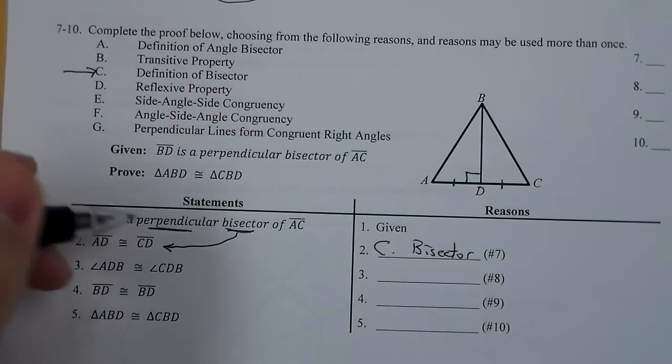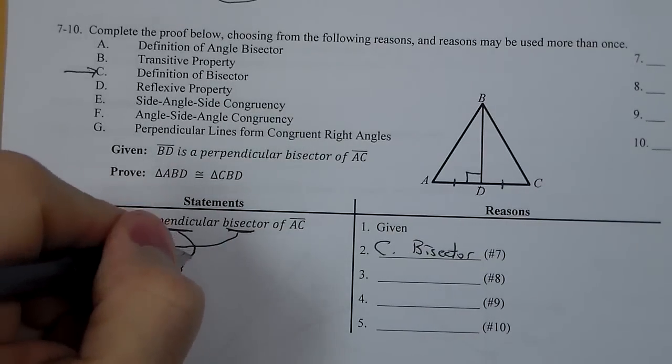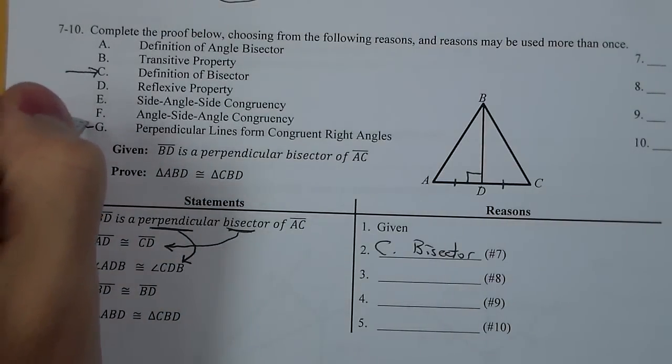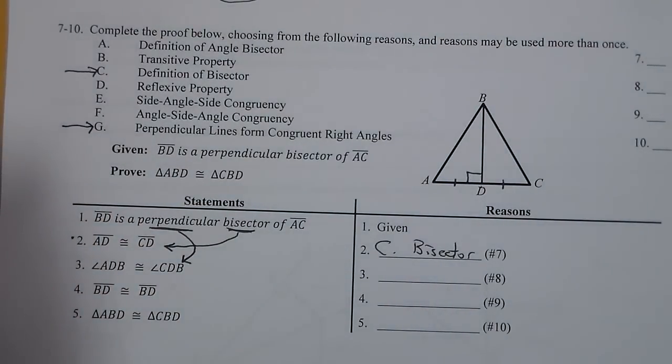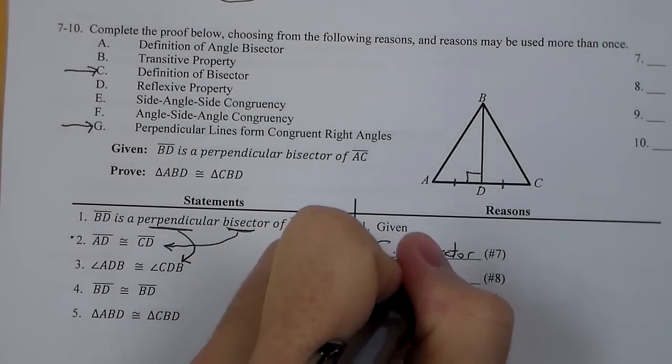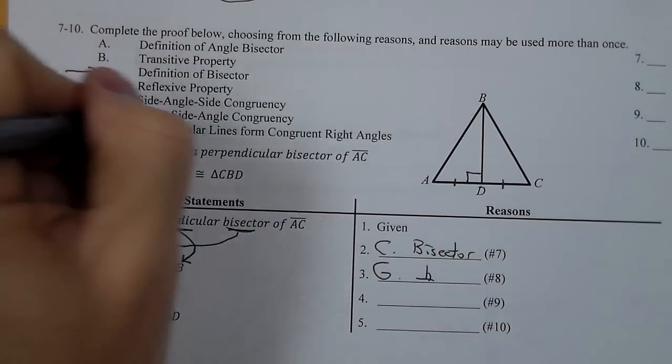Now ADB and CDB are the right angles. This is the perpendicular part of it. For this one, I'm going to go with G, perpendicular lines form congruent right angles. That is the fact they're perpendicular. So those are gone.